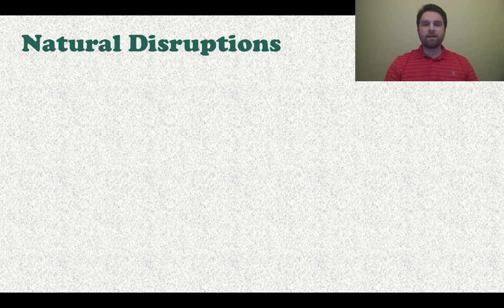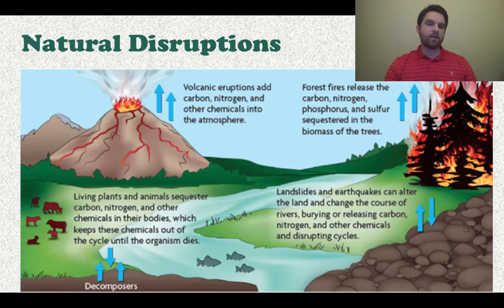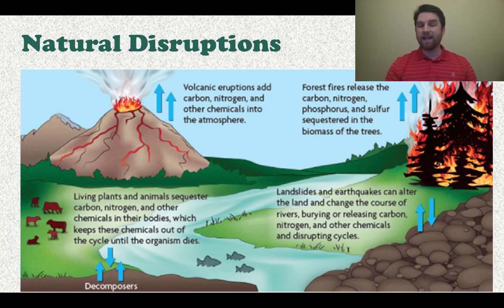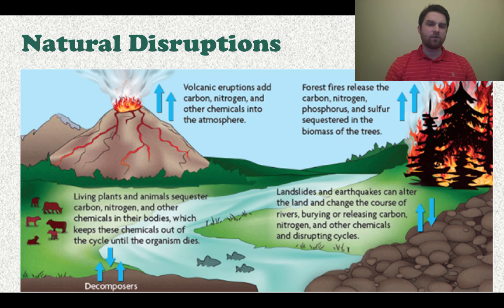There are also things that naturally disrupt the health of an ecosystem. Here is a graphic showing a few of them — you may want to pause the video to read these. Volcanoes, landslides, earthquakes, and forest fires can all naturally disrupt an ecosystem.